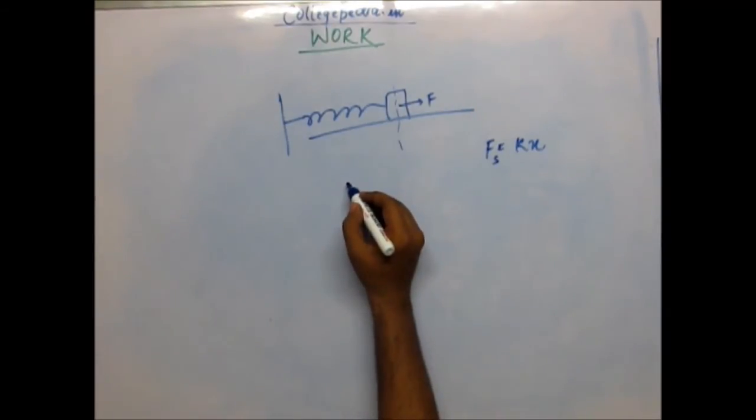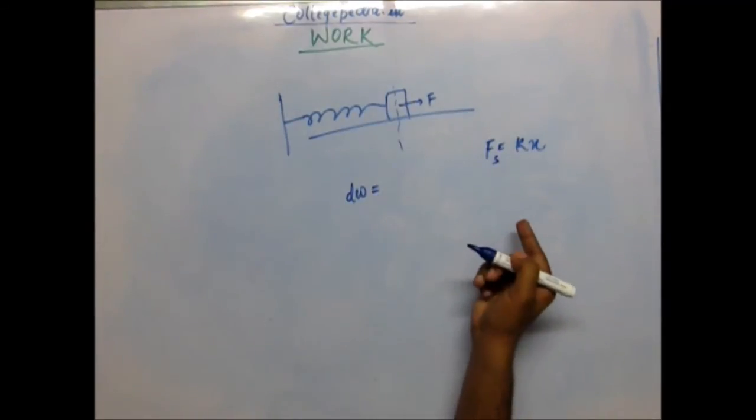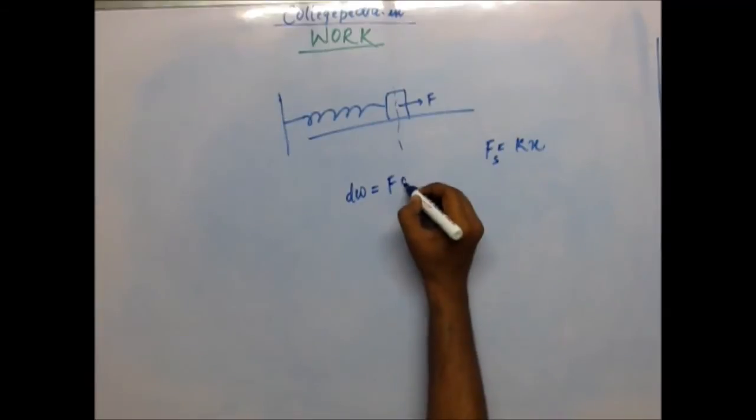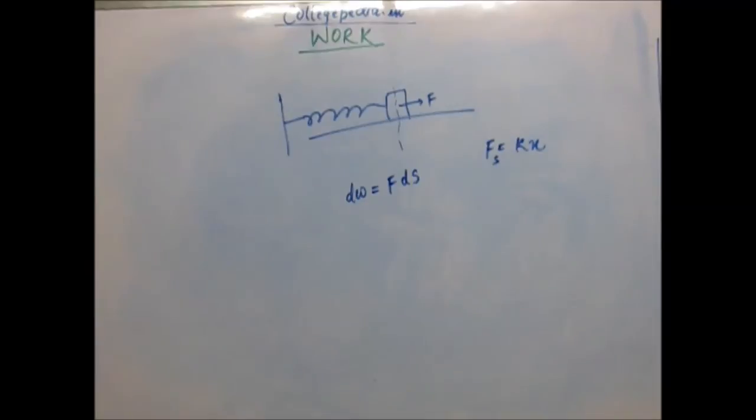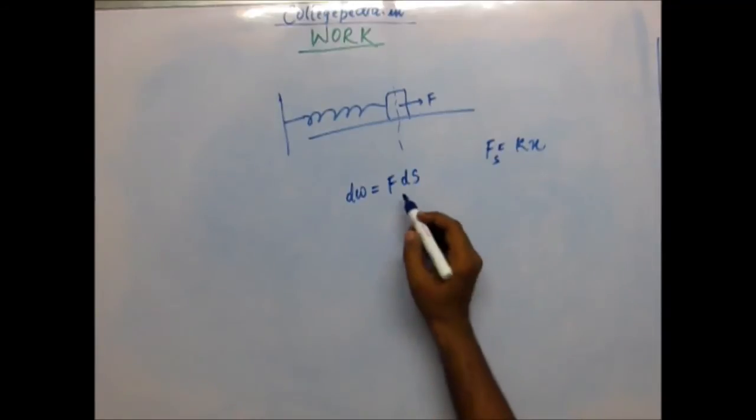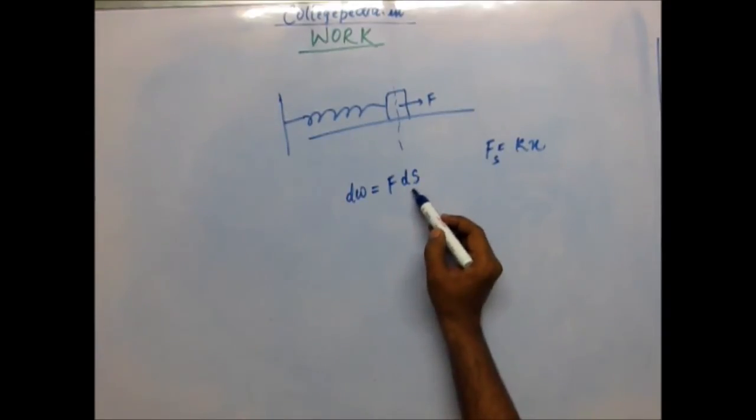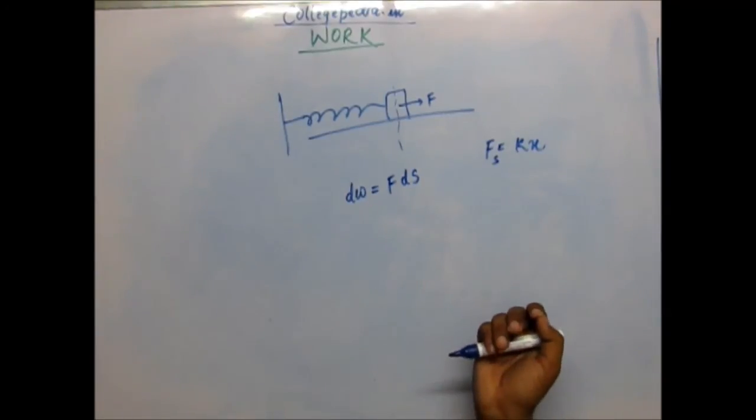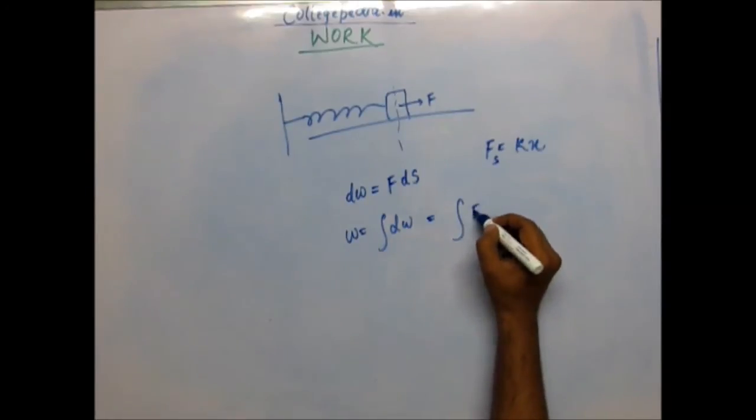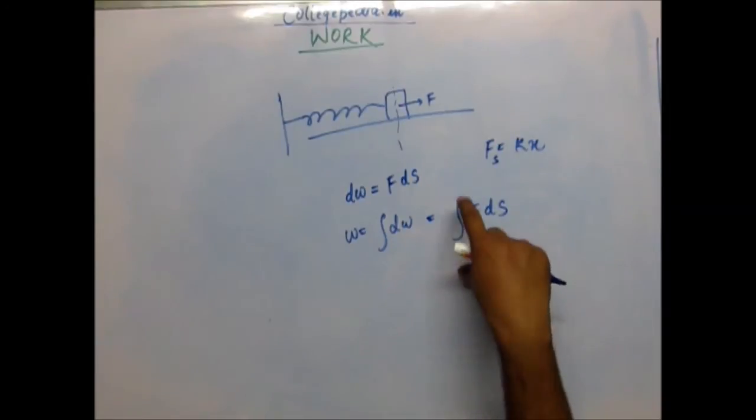In these cases, you would calculate work by integration. The small amount of work done for an infinitesimally small displacement can be given as F into ds, because for an infinitesimally small displacement the force is not considerably going to change. Force will remain almost constant. That error would be corrected by integration. For a very small displacement the force is going to remain constant. The small amount of work is F into ds. The total work would be summation of F into ds.